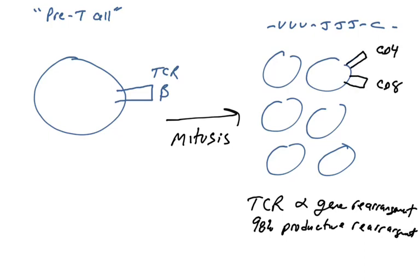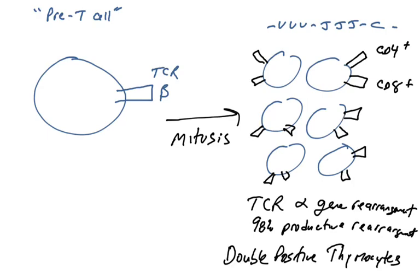Something else that occurs at this stage while alpha gene rearrangement is occurring is the genes for the CD4 and CD8 proteins turn on. Now these cells are making the CD4 protein and the CD8 protein. They make them at the same time. All of these cells here that are undergoing T cell receptor alpha gene rearrangement, we now refer to these cells as double positive thymocytes because they have both CD4 and CD8 on their surface.